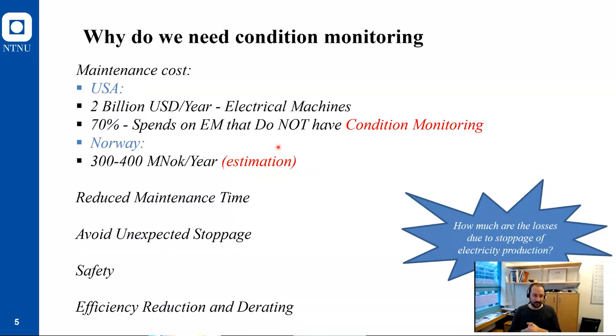Why do we need a condition monitoring system? The most important thing is the maintenance cost. According to a US report, it's around 2 billion US dollars per year they spend for maintenance of electrical machines, and they spend 70% of this money for electrical machines that do not have a condition monitoring system. For Norway we estimated it's around 300 up to 400 million dollars per year. If we have a condition monitoring system we can significantly reduce the maintenance time. With condition monitoring we can determine which type of fault you have and you should look into that part, and in this way the maintenance time will reduce.